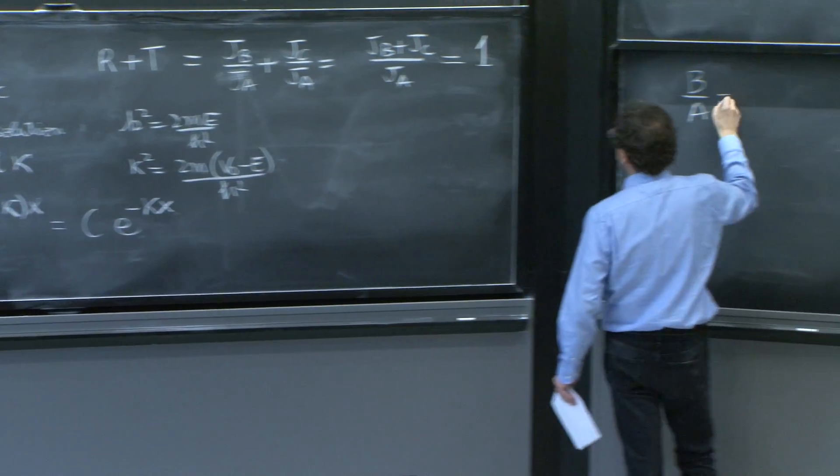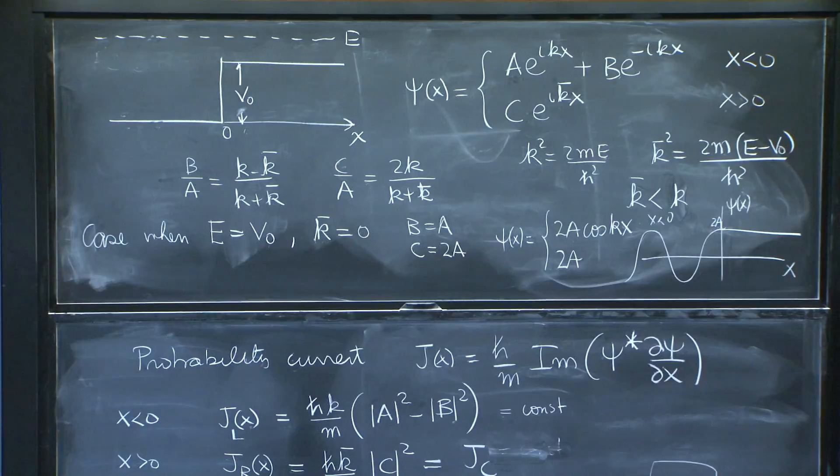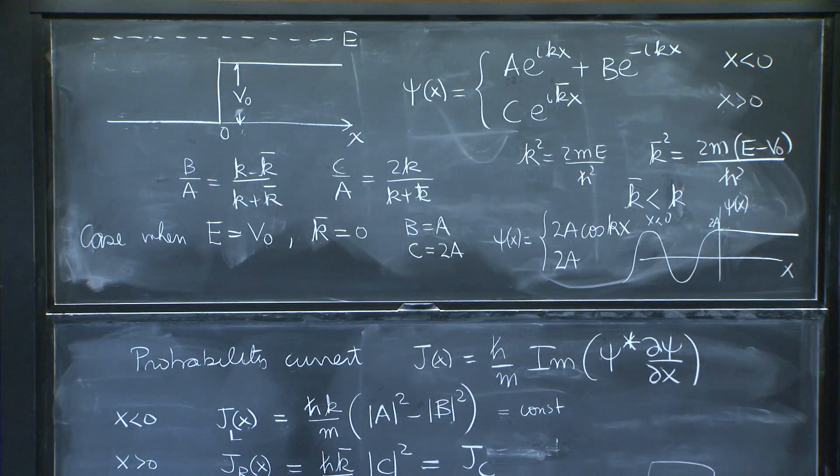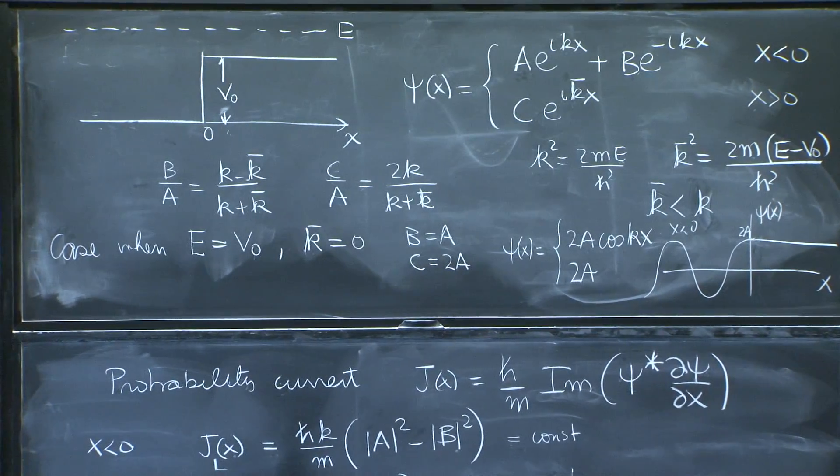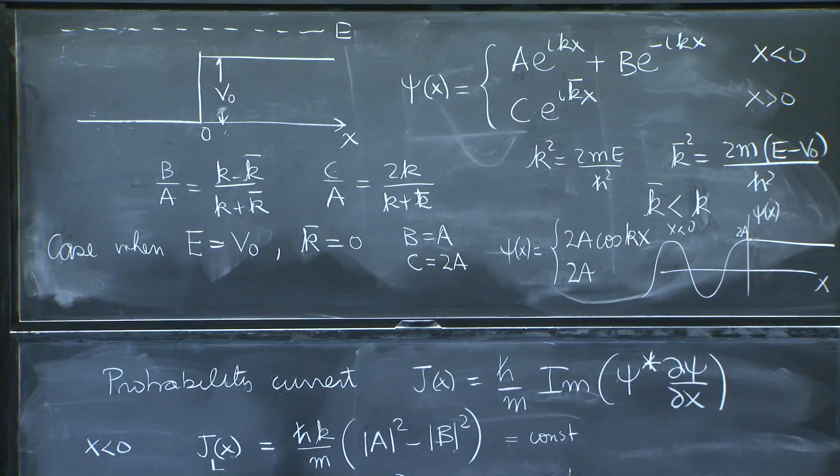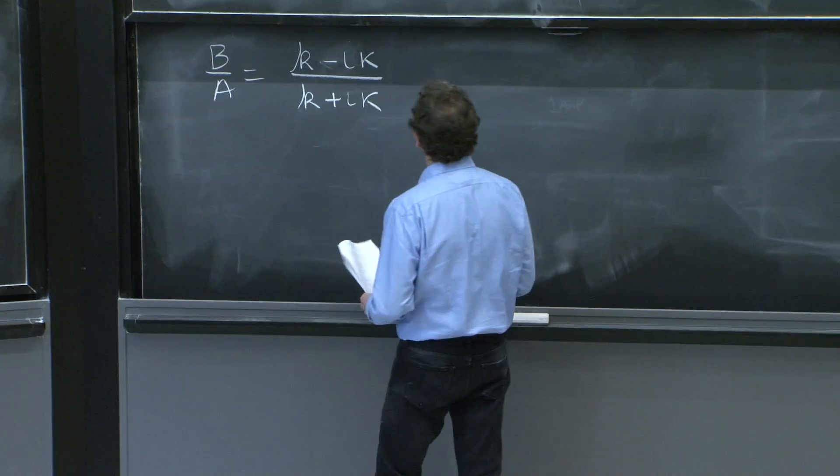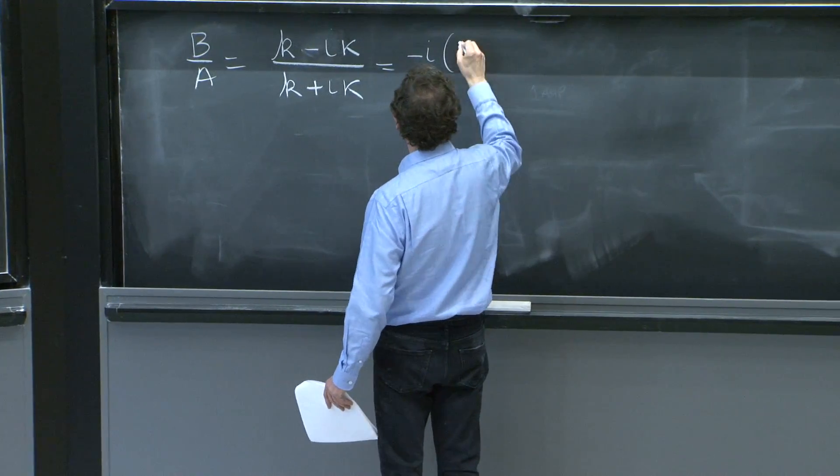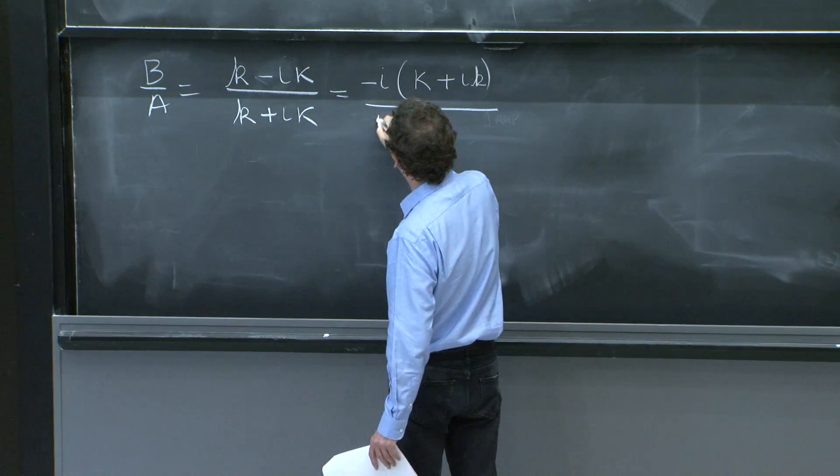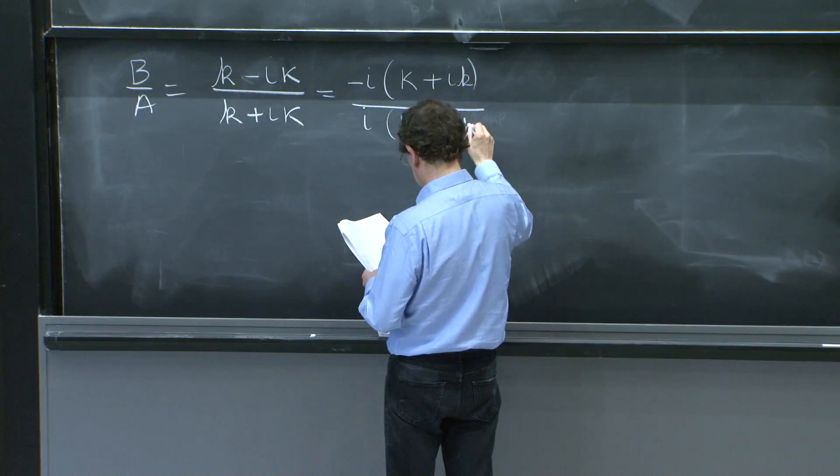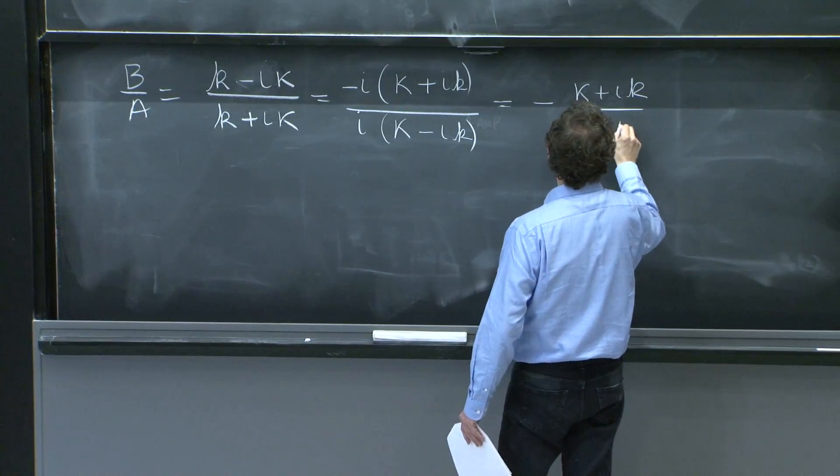So b over a, that used to be top blackboard there, middle, k minus k-bar becomes k plus i. No, minus iκ and k plus iκ. So it has changed. Suddenly, this ratio has become complex. It's kind of interesting. Let's make it clearer by factoring a minus i here. So this becomes κ, and you need plus k. So this must be plus ik over i. This would be κ minus ik. So this is just -(κ + ik)/(κ - ik).